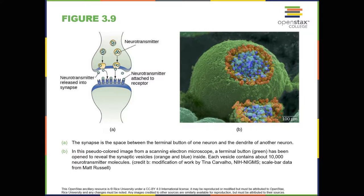How does a neurotransmitter know which receptor to bind to? The neurotransmitter and the receptor have what is referred to as a lock and key relationship. Specific neurotransmitters fit specific receptors similar to how a key fits a lock. The neurotransmitter binds to any receptor that it fits.